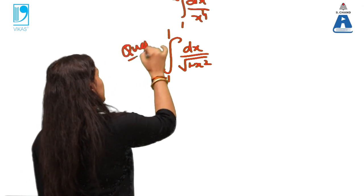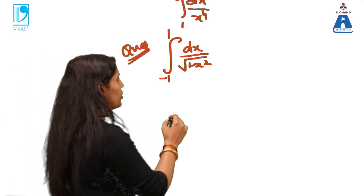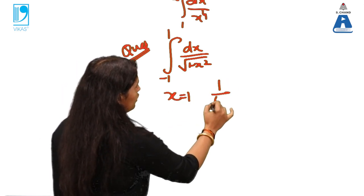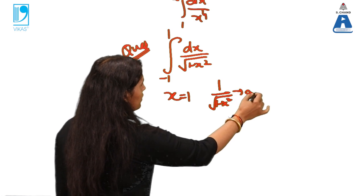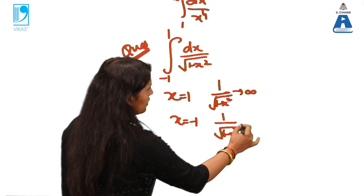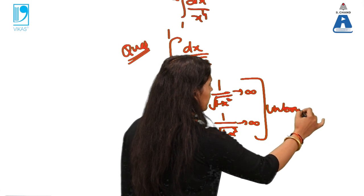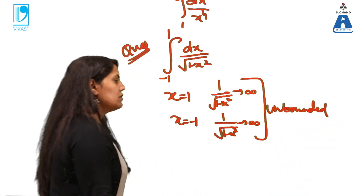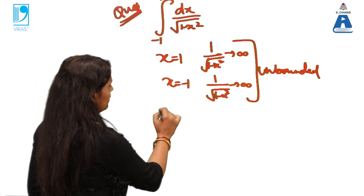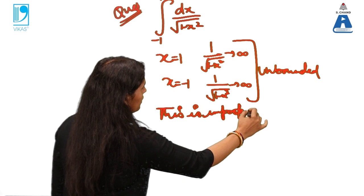Now, the question is this, minus 1 to 1, this time my limits are finite, this time my limits are finite but why this is improper integral? When you are substituting x=1, the value of 1 minus 1 by x square is infinite. When I am substituting x minus 1, again my function is infinite, it means, infinite means unbounded, we call it unbounded situation. So it means this time limit is finite but the function is unbounded. So this is improper, improper integral.